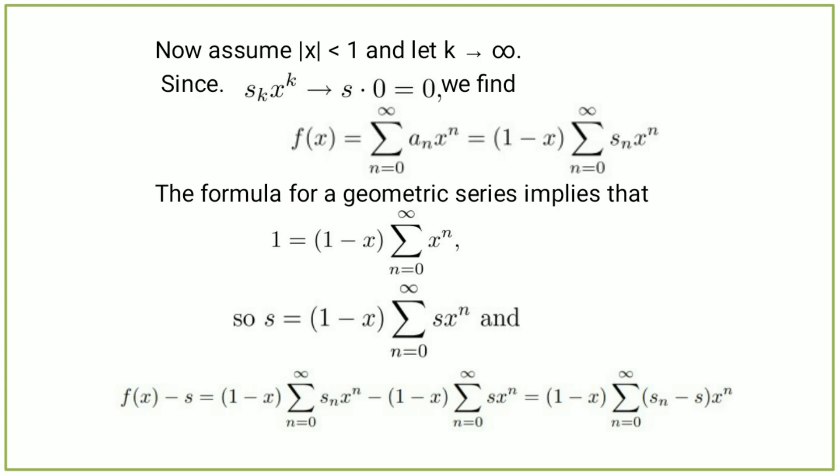Now assume mod of x less than 1 and let k tend to infinity. Since sₖxᵏ tends to 0, we find that f(x) equals the summation from n equals 0 to infinity of aₙxⁿ equals (1 minus x) times the summation from n equals 0 to infinity of sₙxⁿ.